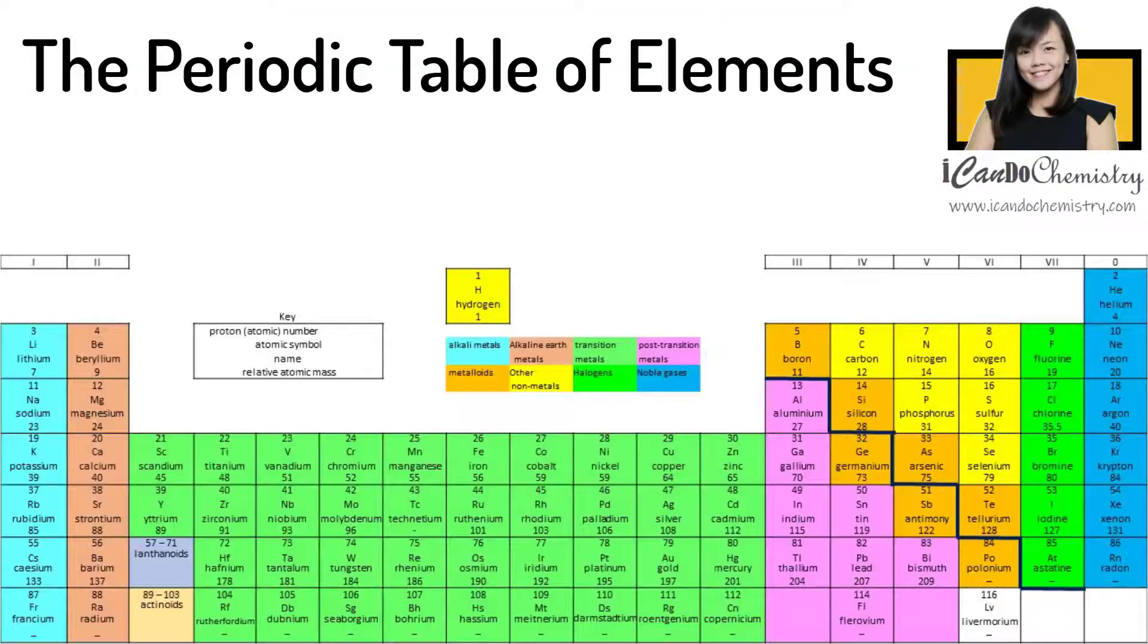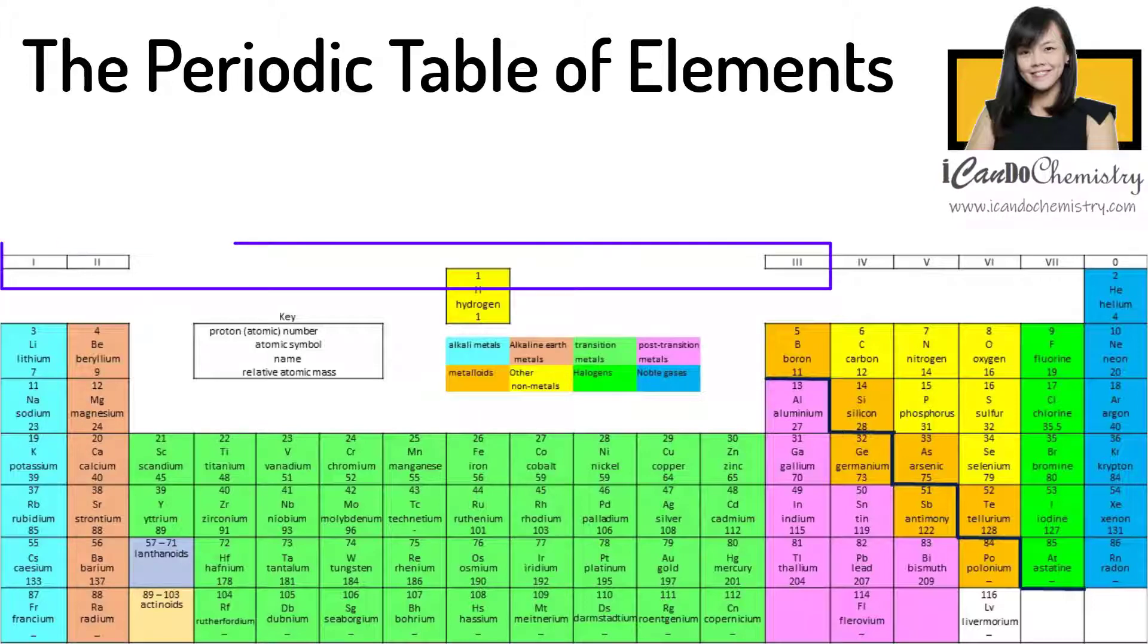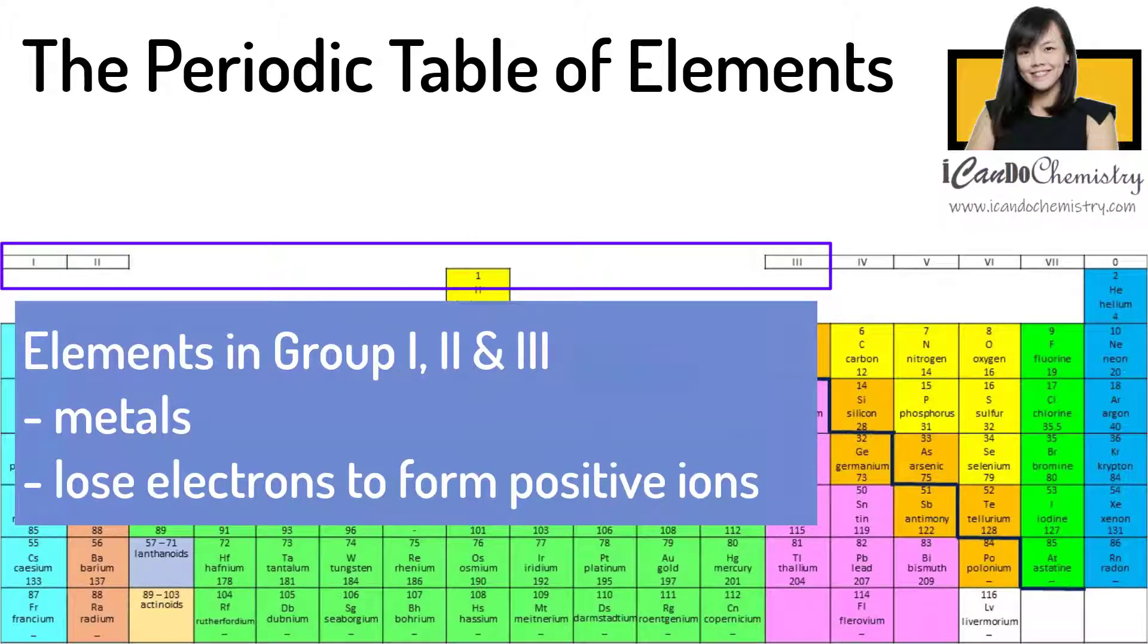So what is the relationship between the group number and the ion formed by an element? The elements in group 1, 2, 3 will form positive ions. These elements, they are metals. They tend to lose electrons to form positive ions. The charge of the ion is the same as the group number of the element forming it. So the charge of the ions form positive 1, positive 2 and positive 3 respectively.